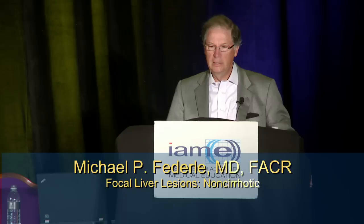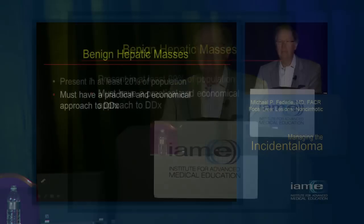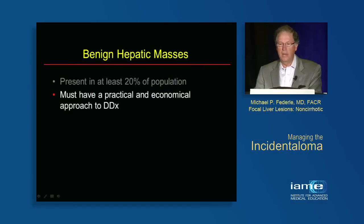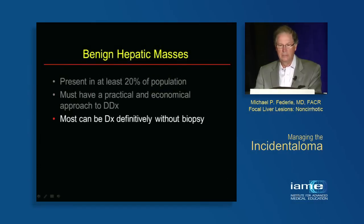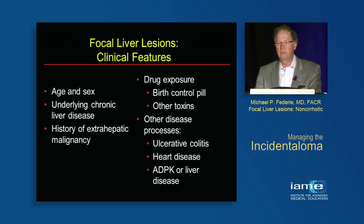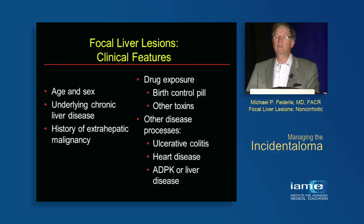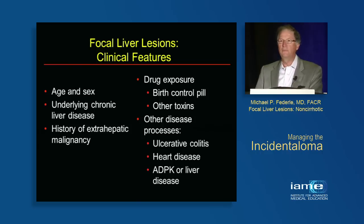We're going to talk about working up the incidental liver mass. There are lots of benign lesions out there, present in at least 20% of the population, and because of this we really need a practical, economical, and ethical approach to the differential diagnosis. I am going to postulate that we can diagnose most of these effectively and definitively without biopsy, but to do so you really need to consider a number of factors.